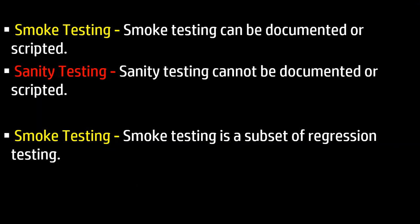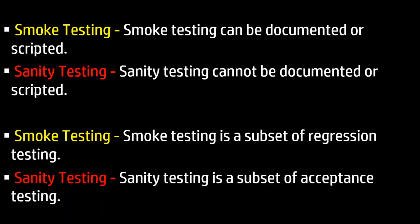In case of smoke testing, it is a subset of regression testing. Basically, we will already have a set of scenarios, and those scenarios will be executed on every new release that comes to the QA environment. In case of sanity testing, it is a subset of acceptance testing. It will be without a document or script — just exploring the area where the actual implementation or features have been implemented.